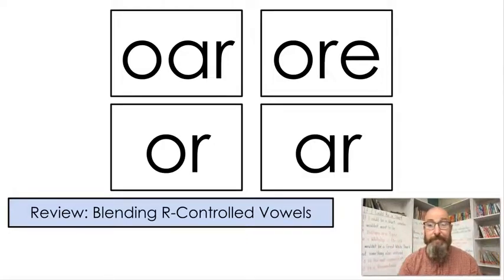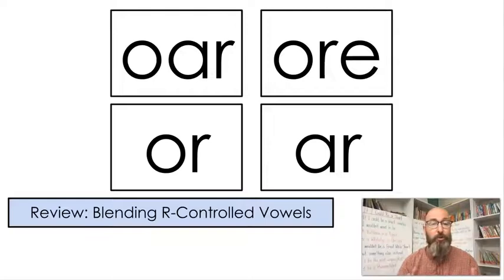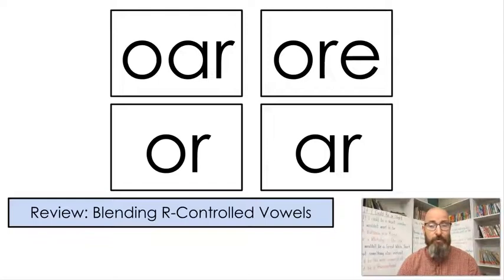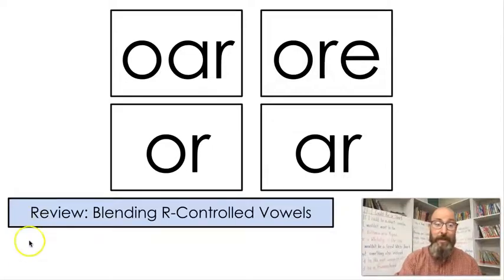A-R — and what does that say? It says 'ar.' That's right, it does not say 'or,' it says 'ar.' So those are the four R-controlled vowels we've already learned this year. There are others but we haven't gotten to those yet. We're actually going to practice blending some, but first let's practice writing them.